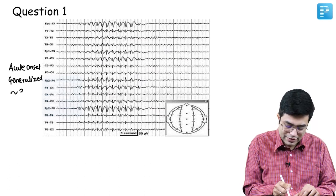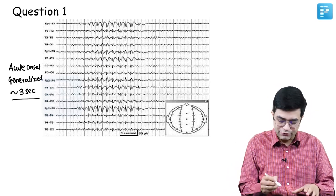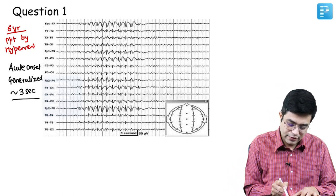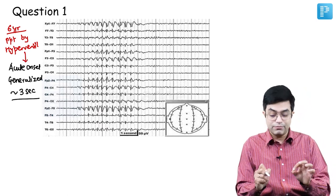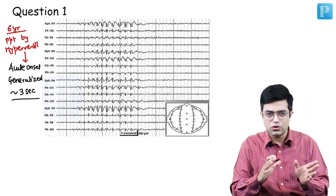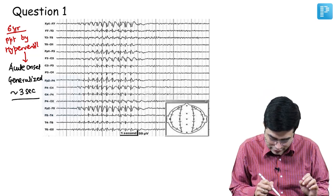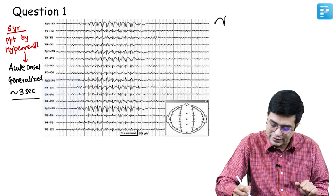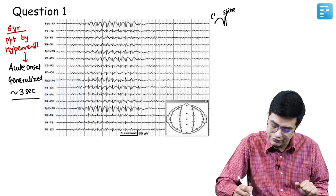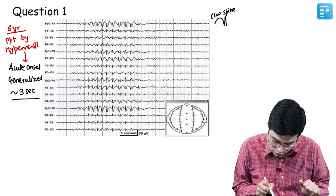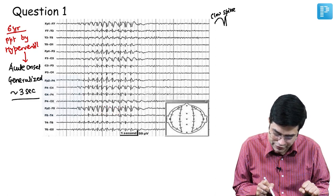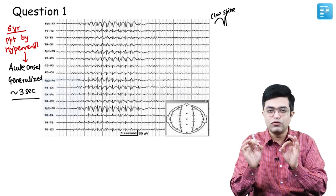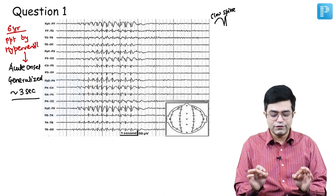The question already tells you it is a six-year child and the seizure was precipitated by hyperventilation. Everything fits into absence seizure. If you look at the seizure episode itself, try to see if there is a spike-and-dome pattern — also called spike-and-slow-wave pattern. You will find one slow wave, two slow waves, three slow waves; one spike, two spikes, three spikes — three spikes in one second, three spikes associated with a slow wave. This three-spike-and-slow-wave pattern is characteristic of absence seizure.